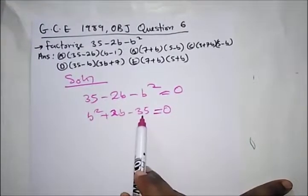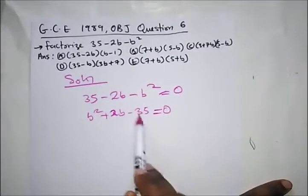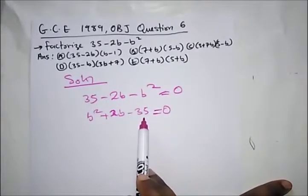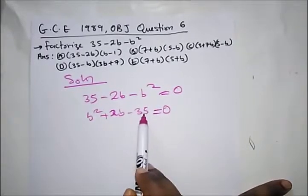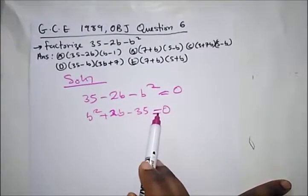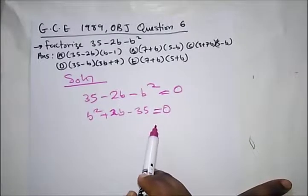And also when we add or subtract we have to have 2. Our two factors from this question will be 7 and 5. 7 times 5 is 35.